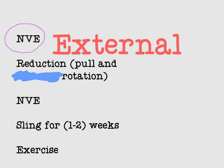To allow external rotation, we first pull or traction the arm, then apply external rotation. After reduction, we perform neurovascular examination again to ensure no injuries were caused. Following this, we apply a sling for one to two weeks. Exercise is advisable but should be appropriate to the case to avoid further injury.